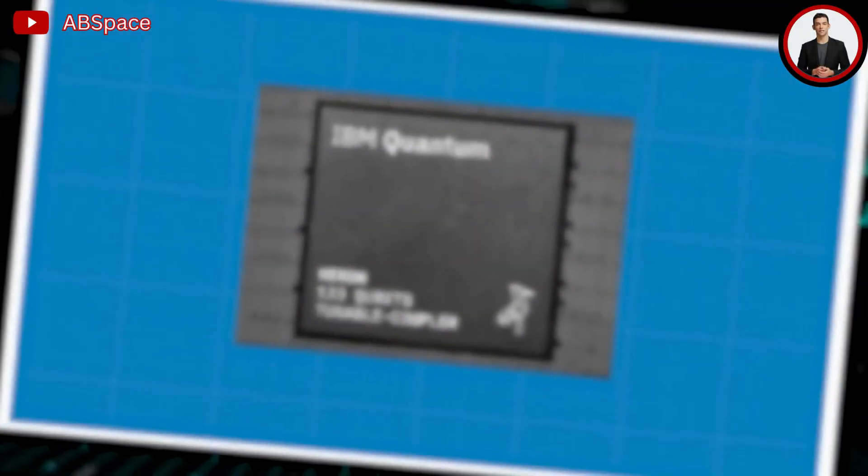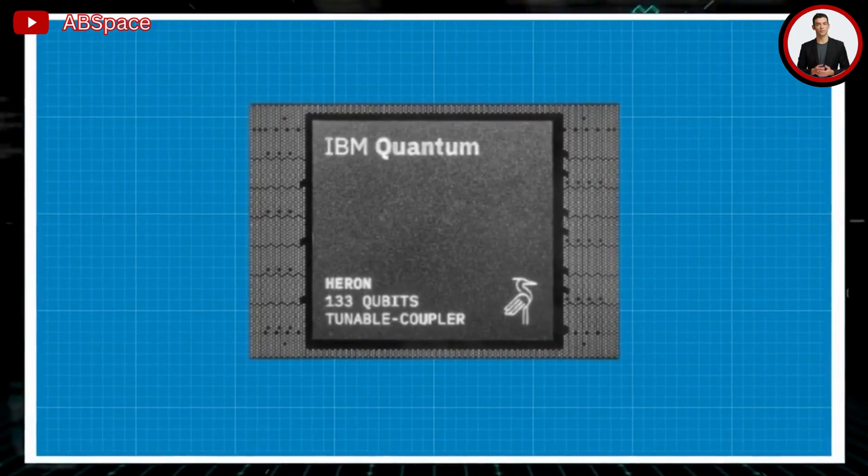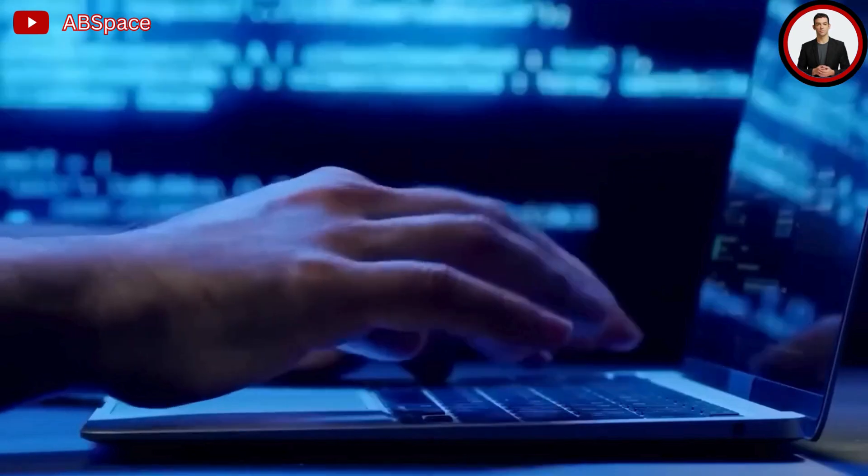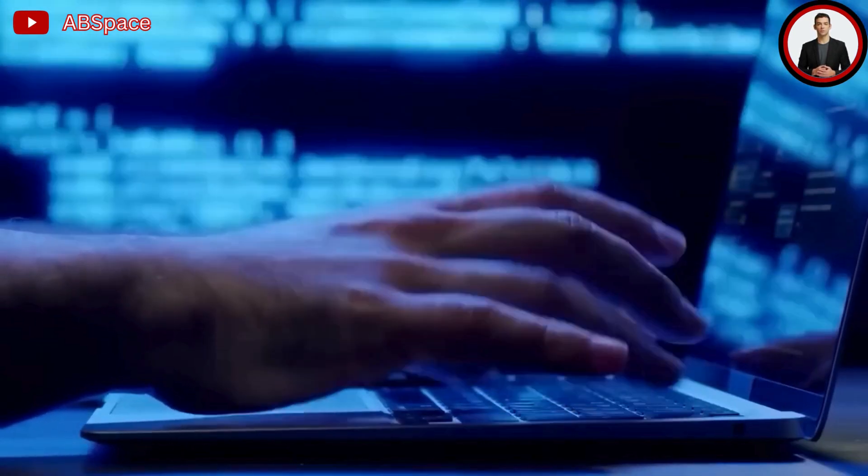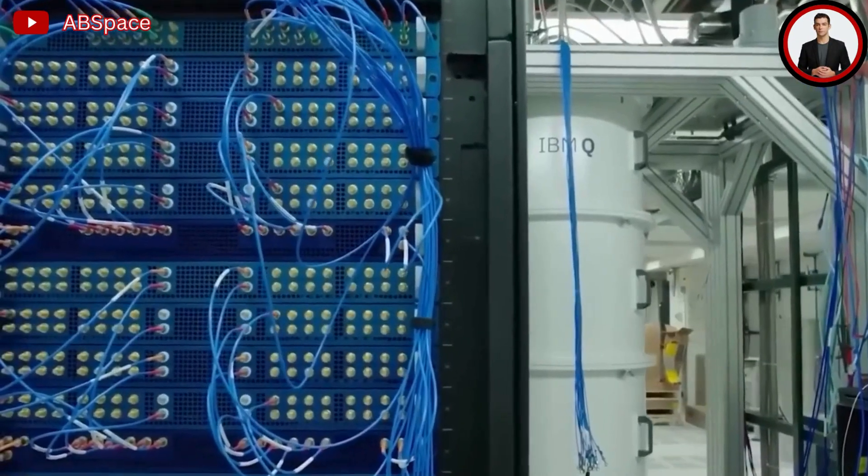As part of its new strategy, the corporation also introduced a chip known as Heron. This chip has 133 qubits but it has an error rate that is unprecedentedly low, in fact three times lower than the error rate of IBM's prior quantum processor.